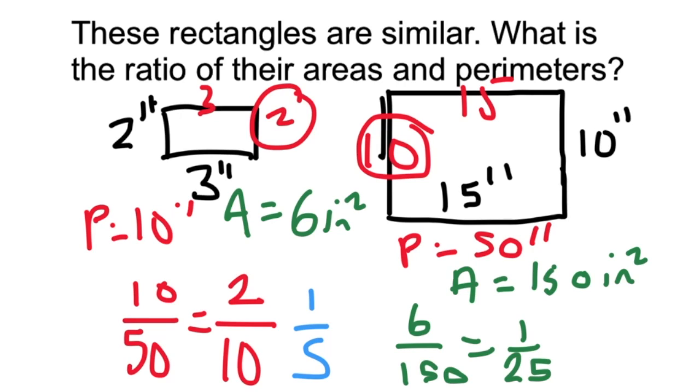When we doubled it, it wasn't going to double the area. It actually was 2 squared. So the ratio of the areas is not the same as the ratio of the sides like perimeter. Instead, you need to square the ratio of the sides.